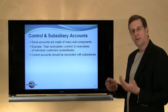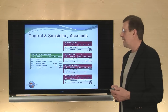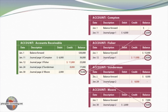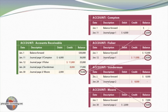It's important that you reconcile your subsidiary and control accounts. Here I have an example: the accounts receivable general ledger account on the left — the green account — shows a beginning balance of $30,000. There was a sale on January 11th debiting accounts receivable for $6,000, collections on January 12th and 24th for $11,000 and $8,000 respectively, and another sale for $2,000 on January 30th. The general ledger tells me I'm owed $19,000 in total, but not who owes it. The subsidiary accounts for Compton, Fisher, Sunderman, and more show which transactions relate to which customer and what the individual balances are.